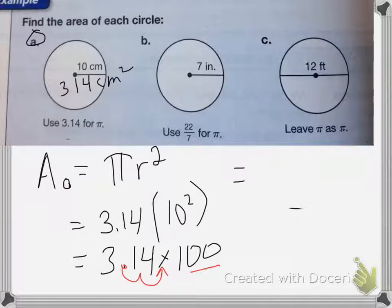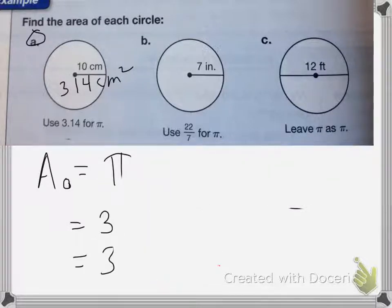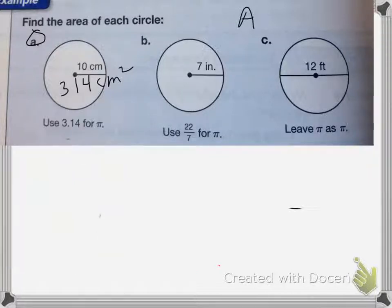For B, it wants us to use 22 sevenths for pi. So again, the area equals pi times radius squared.